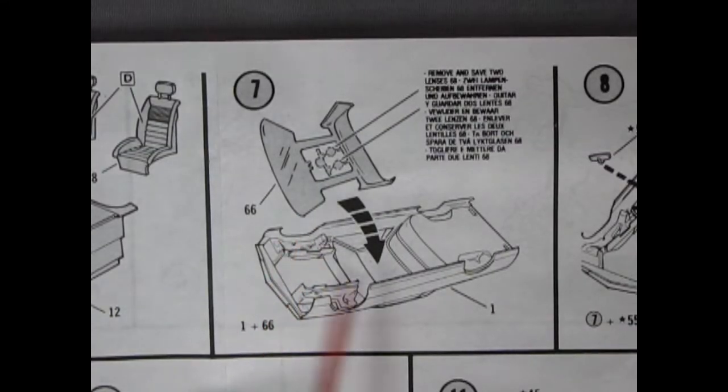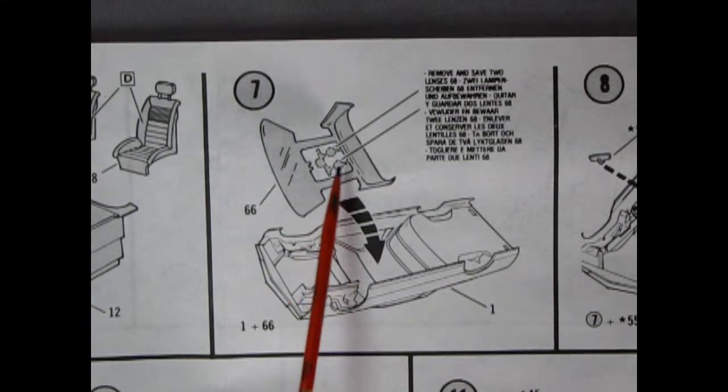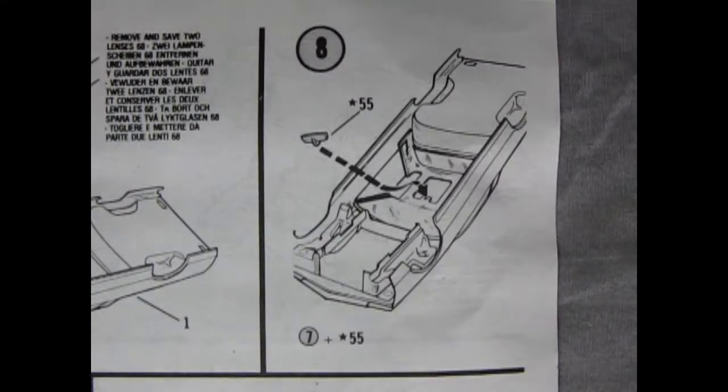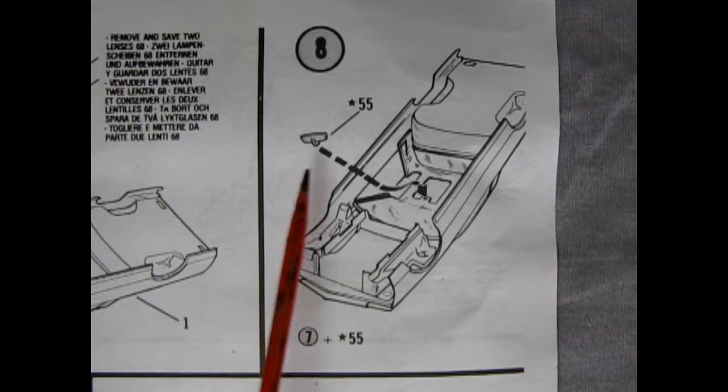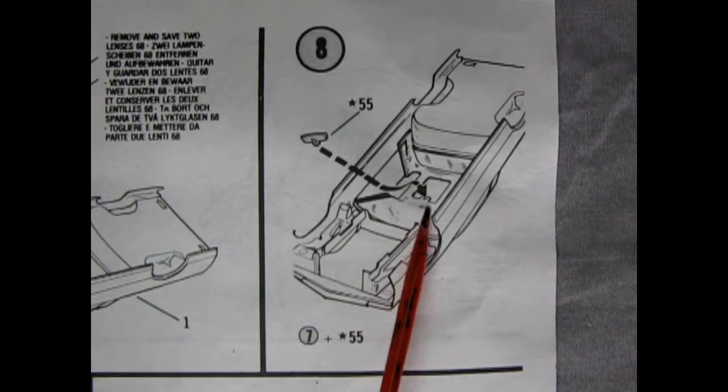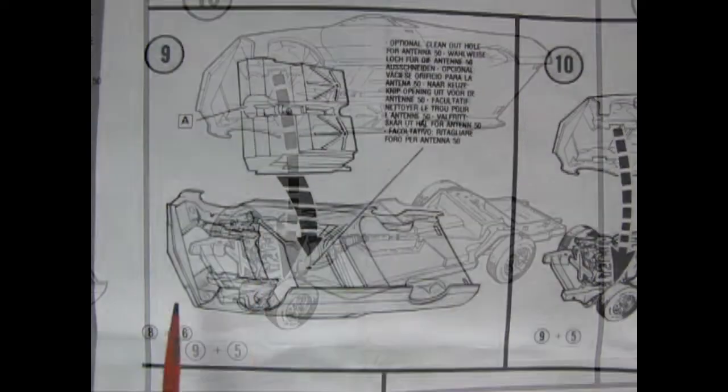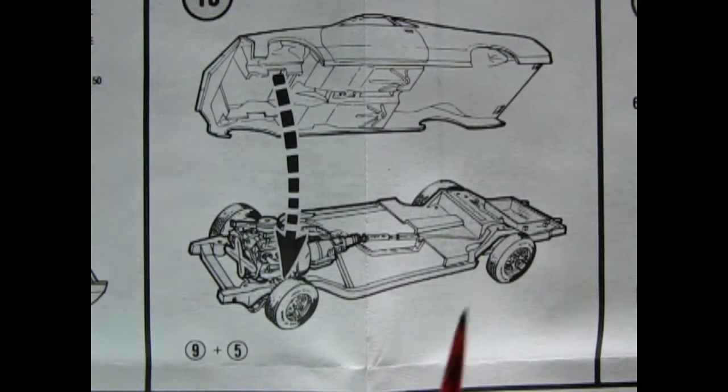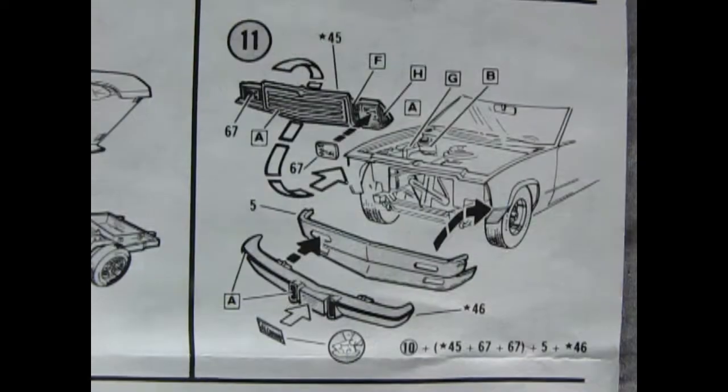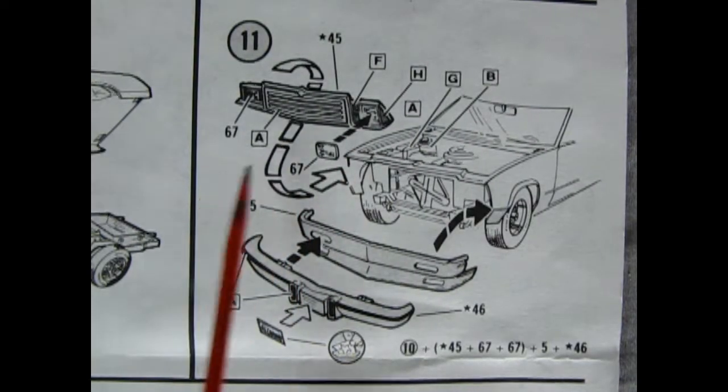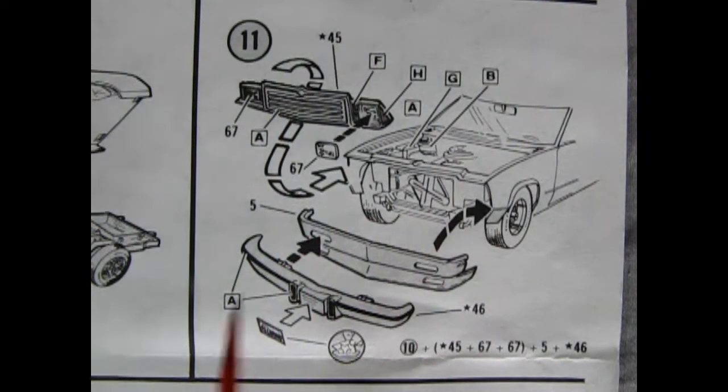Panel 7 shows our glass being dropped in and you also have to cut out your headlights out of here. Panel 8 is really straightforward, it's just showing our mirror being put into the center of our front windshield. Next, we hook in our assembled interior into our body. Step 10 shows our body being dropped onto our chassis rails. Step 11 shows our headlights going into our grille assembly which then goes into the front of the car.